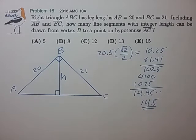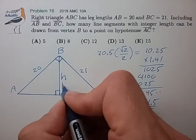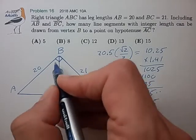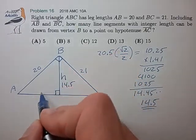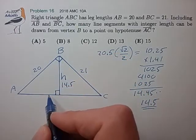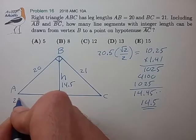Now if H is 14.5, then as we construct these integer line segments from B to the hypotenuse AC, we'll start with length 20,